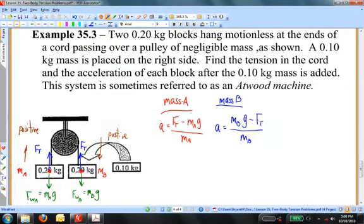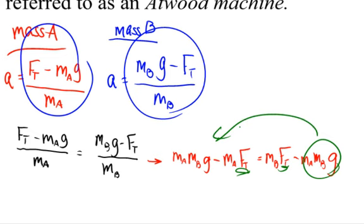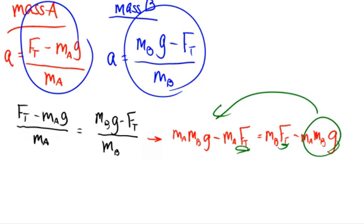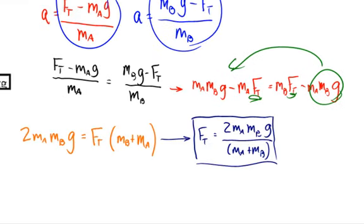Let's solve the system. I'm going to set the right-hand side of each of these equations equal to each other and solve. Cross-multiply. Now I notice that I have an F_T on each side of the equal sign. I want to collect those F_T terms together, take the other term that doesn't have F_T and move it to the other side. I'll notice there are common factors, so I'm going to factor and move things around in a single step. Divide both sides by the parentheses, and there's my expression for the string tension.